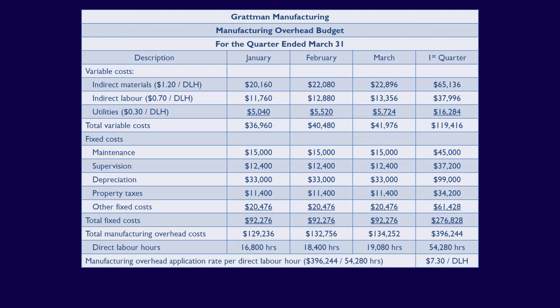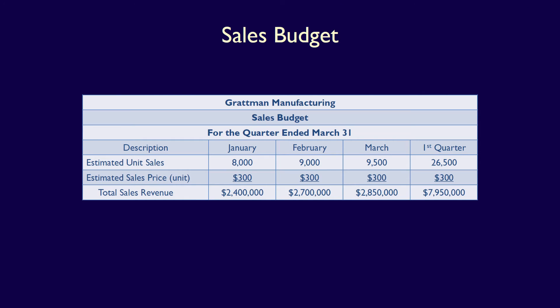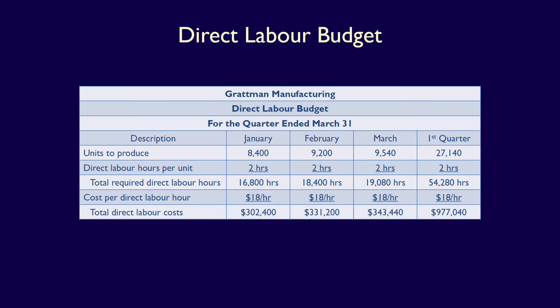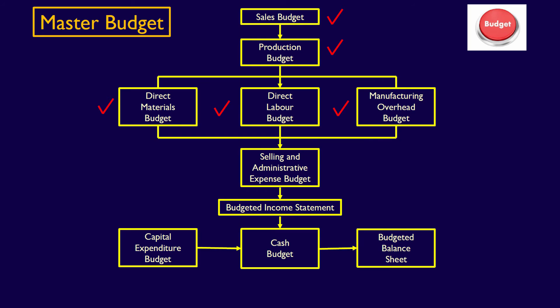That's it. We have now completed the manufacturing overhead budget, which means we've prepared the first five operating budgets in the master budgeting process and the last operating budget needed to calculate the cost per unit: direct materials, direct labour, and manufacturing overhead. All of these budgets – the sales budget, production budget, direct materials budget, direct labour budget, and the manufacturing overhead budget – are required parts of the master budgeting process for a manufacturing firm. In our next video, we'll continue with the selling and administrative expense budget. Thank you so much for watching!